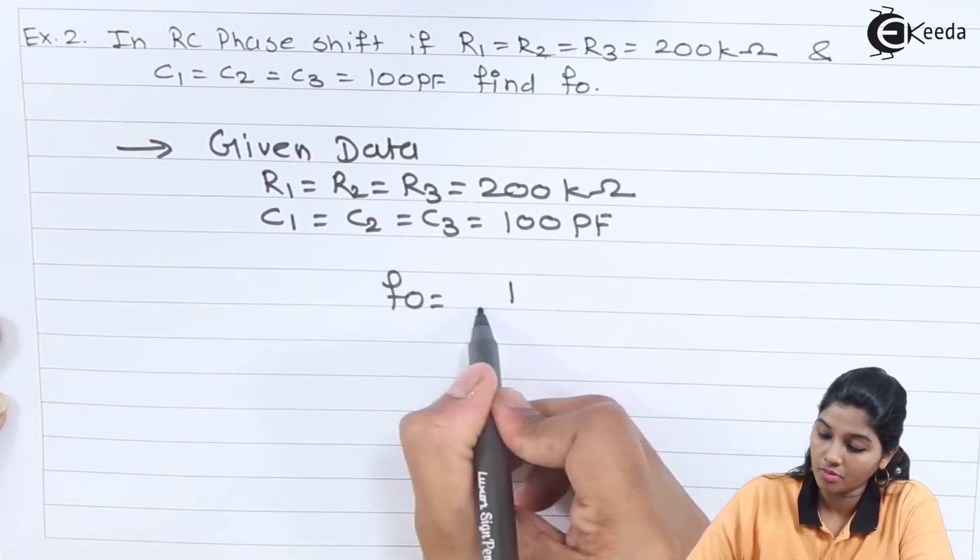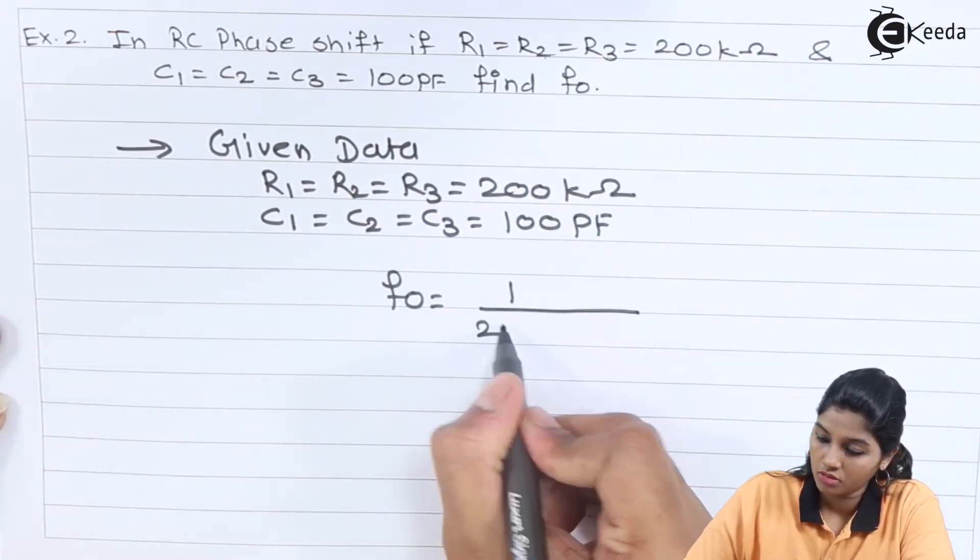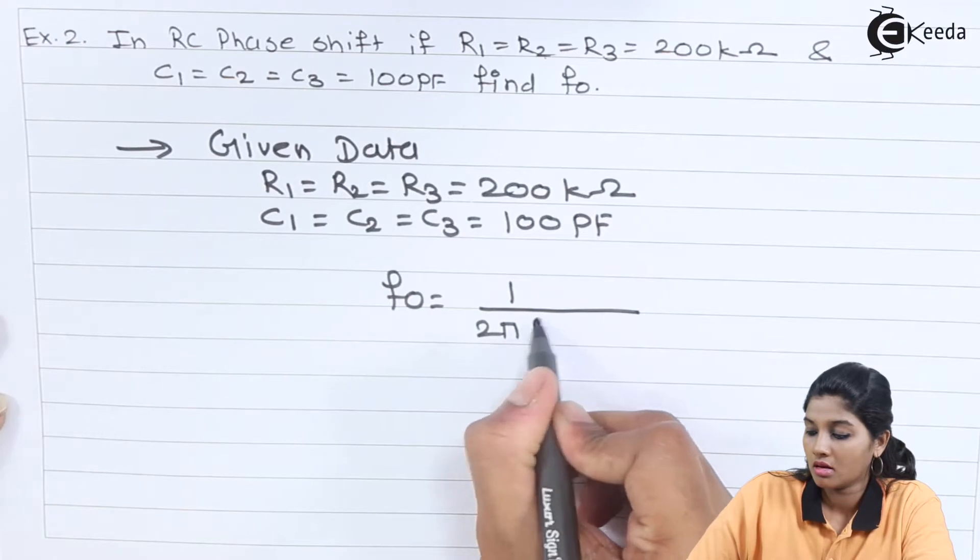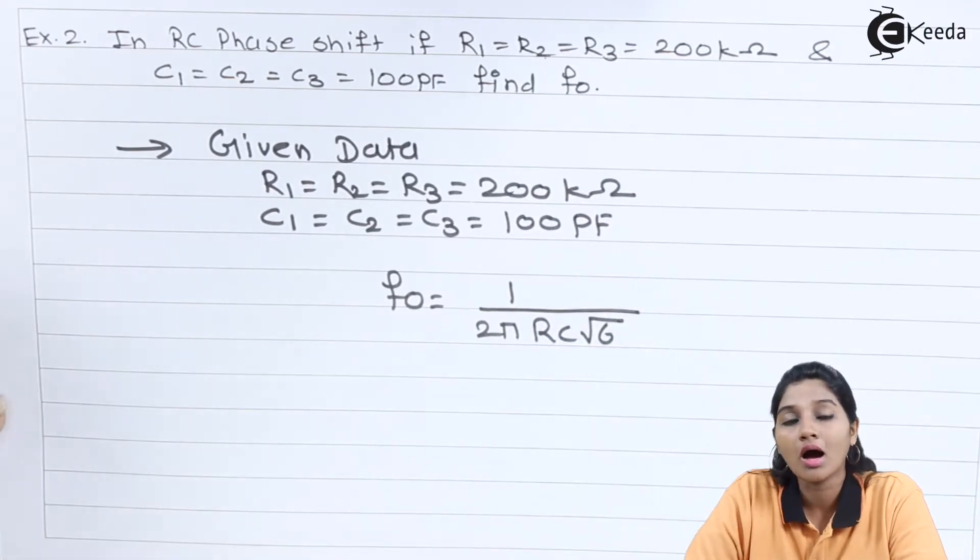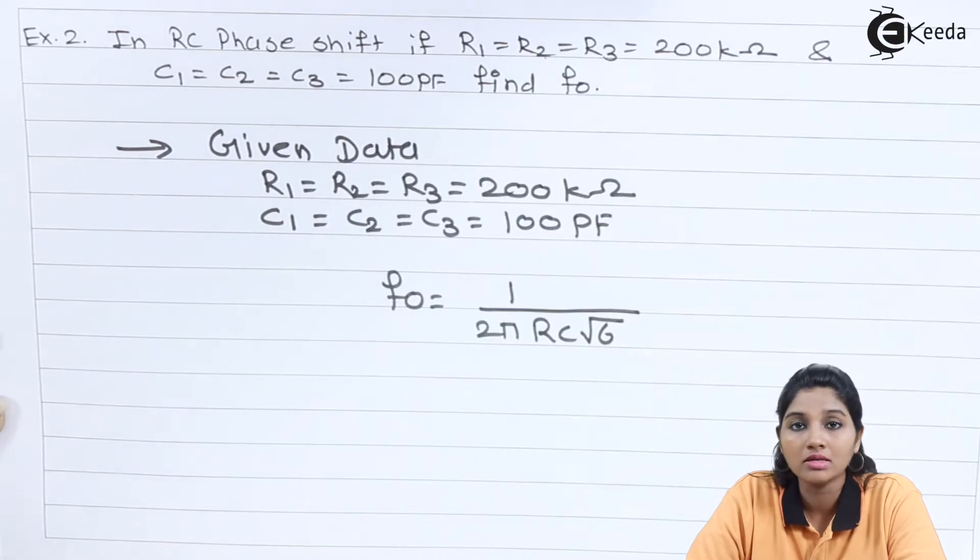So F0 is equal to 1 upon 2 pi RC into square root of 6. Now here R1, R2, R3 are equal to R and C1, C2, C3 is equal to C only.